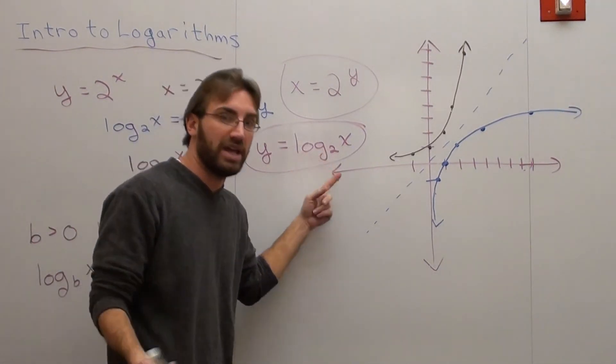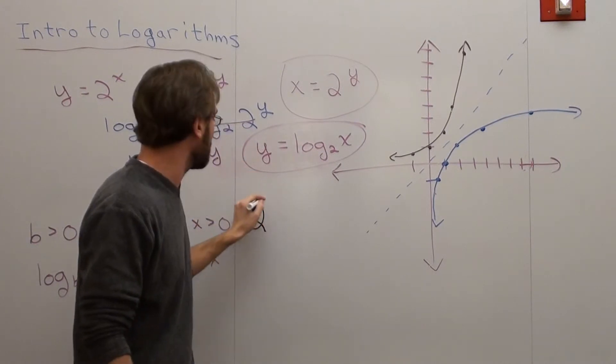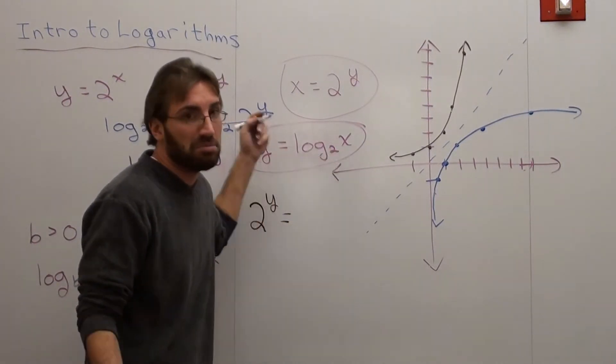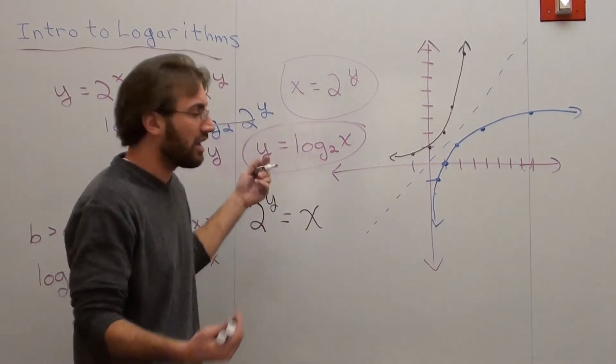What's this number called? It's called a base. And you take it to whatever this is. And it's equal to this. It's the same exact thing. Of course it is.